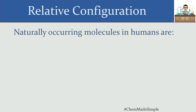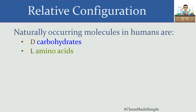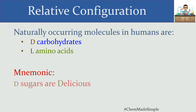In terms of both classes of biomolecules, the ones naturally occurring in humans are the following: D carbohydrates are the naturally occurring ones. Our bodies, in terms of what we can metabolize and what we make, are only dealing with D carbohydrates and L amino acids.